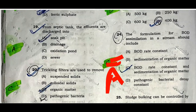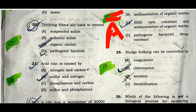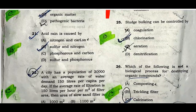Question number nineteen: From a septic tank, the effluent is discharged into the soak pit. Option A is the correct one. Question number twenty: Trickling filters are used to remove organic material. Option C is the correct one.